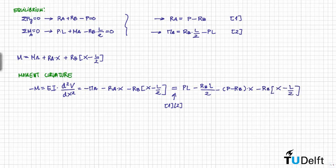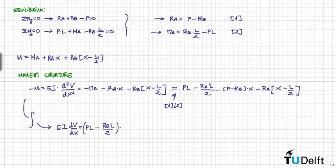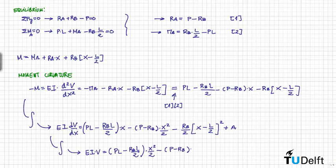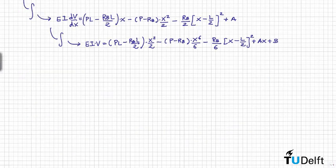We integrate this equation once to obtain the expression for the slope, and then we integrate once more to obtain the expression for the deflection. We then have to apply boundary conditions to determine the constants of integration, a and b.